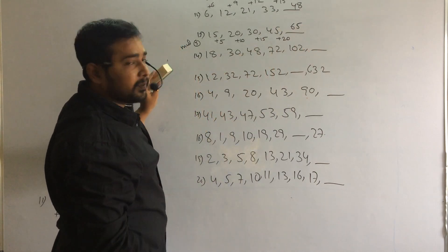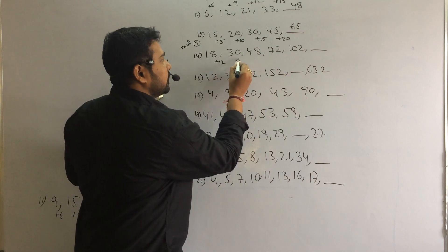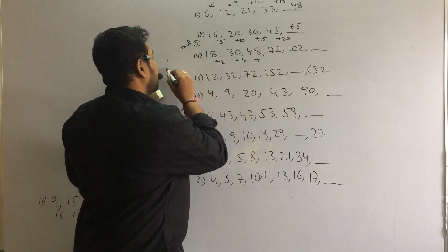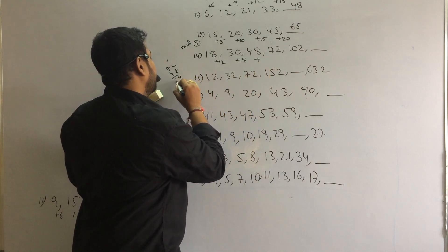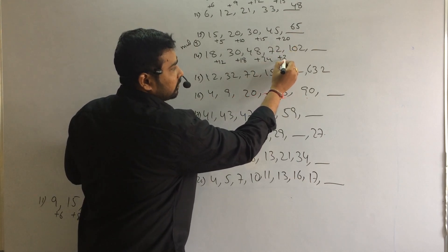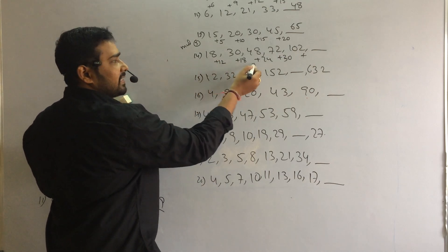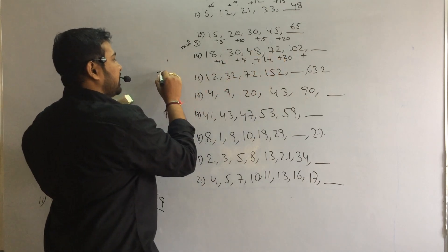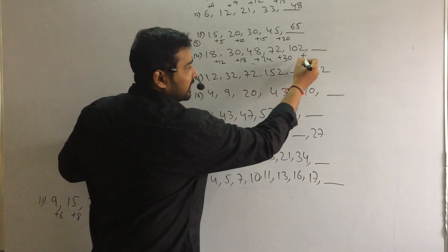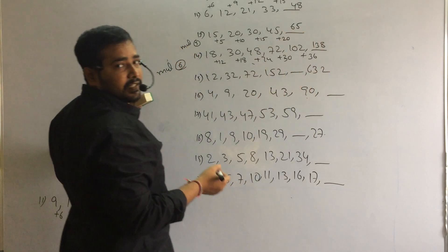Here is the 14th problem. Difference is very normal. Difference is 12, 18, 24, 30. If the difference is 6 twos, 6 threes, 6 fours, 6 fives. So here difference is multiple of 6. 6 times 5 is 30, 6 times 6 is 36. If you add 36 to 102, answer is 138 is your answer.